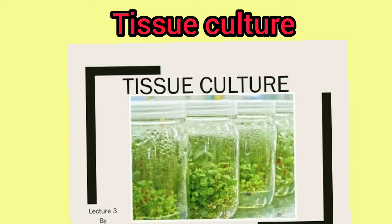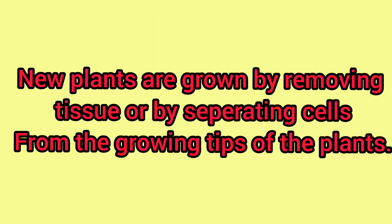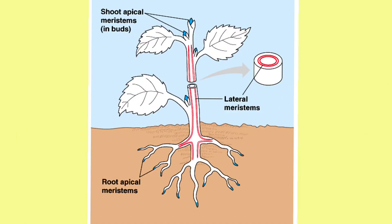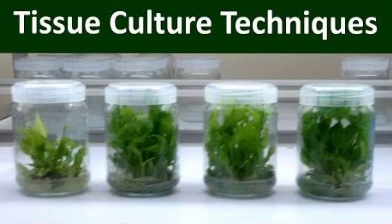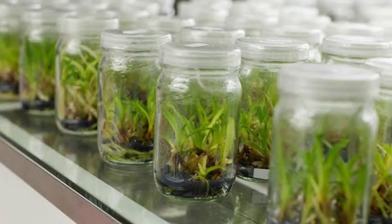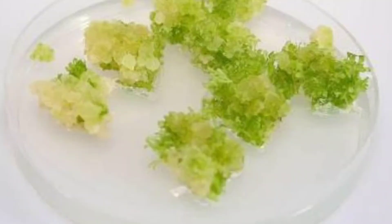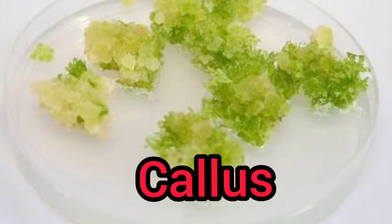Now, tissue culture is another process of vegetative propagation. In tissue culture, new plants are grown by removing tissue or separating cells from the growing tip of a plant — where meristematic tissues are found. These cells are placed in a laboratory in an artificial medium consisting of plant hormones, called phytohormones, in a test tube or beaker. The cells multiply under the influence of these hormones, forming a group of cells called callus.